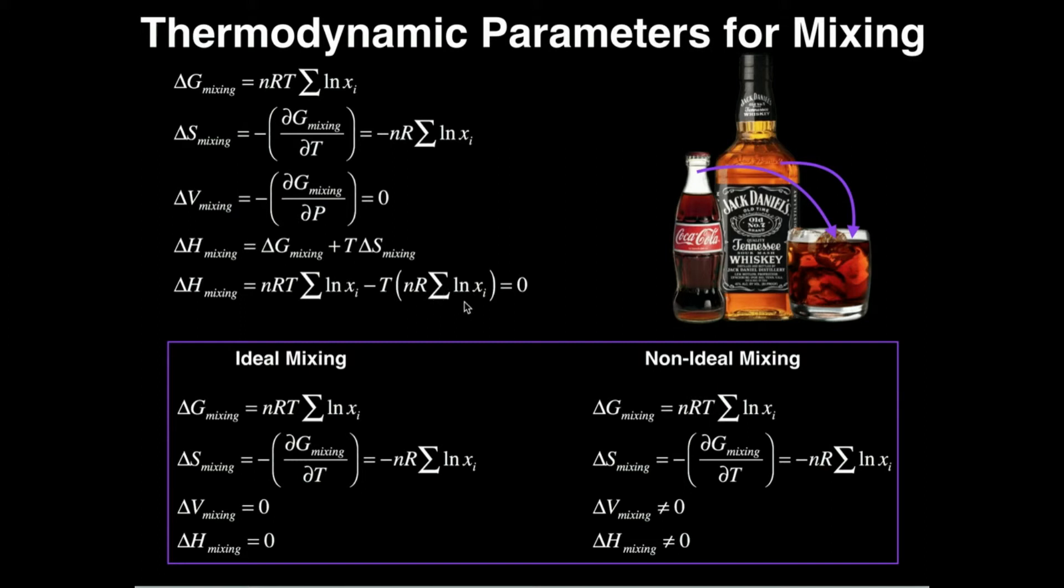Well, the delta S is negative nR times the sum of the natural log of the mole fractions, so I put that right here—nR times the sum of the natural log of the mole fractions—and I've thrown this negative sign out in front. But remember, it's T delta S, so I have to put an extra T in here. And notice we get nRT times this summation minus nRT times that summation, and obviously when you have the same thing minus itself, you get zero. So for ideal mixing, the delta H of mixing is zero. Again, just like in the case of the delta V of mixing, the delta H of mixing for a non-ideal solution, non-ideal mixing, is not going to be zero.